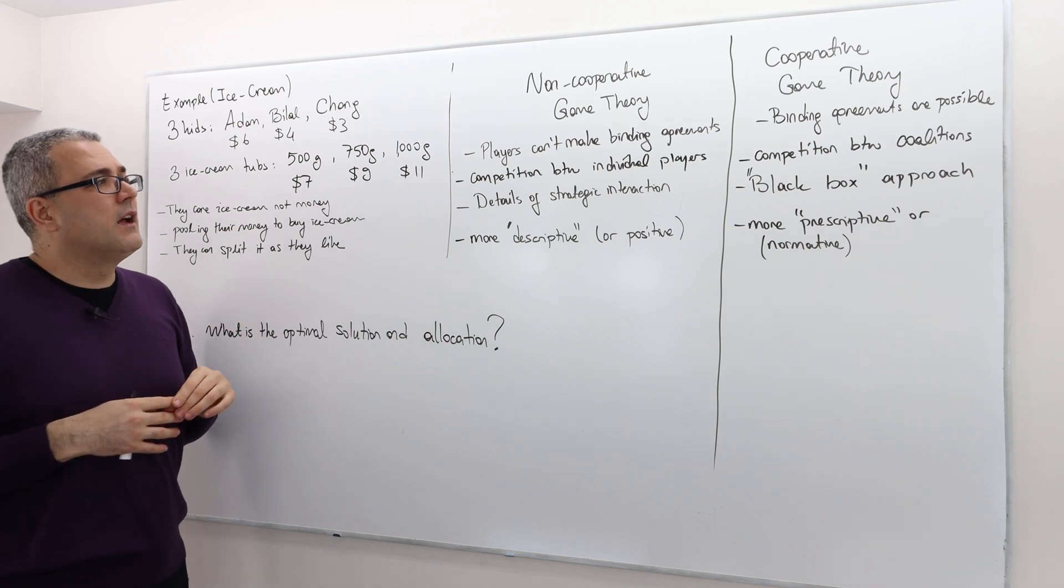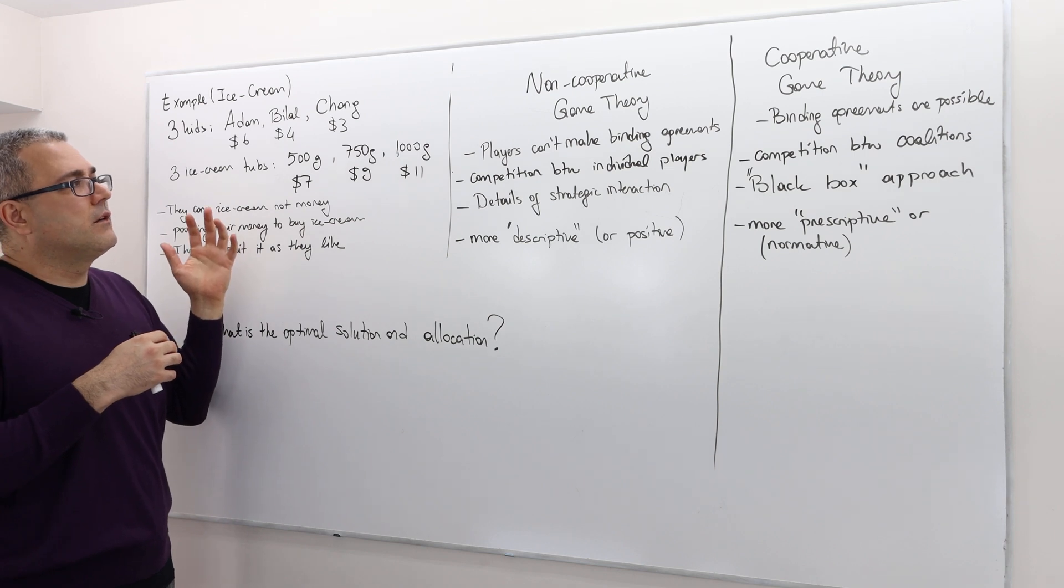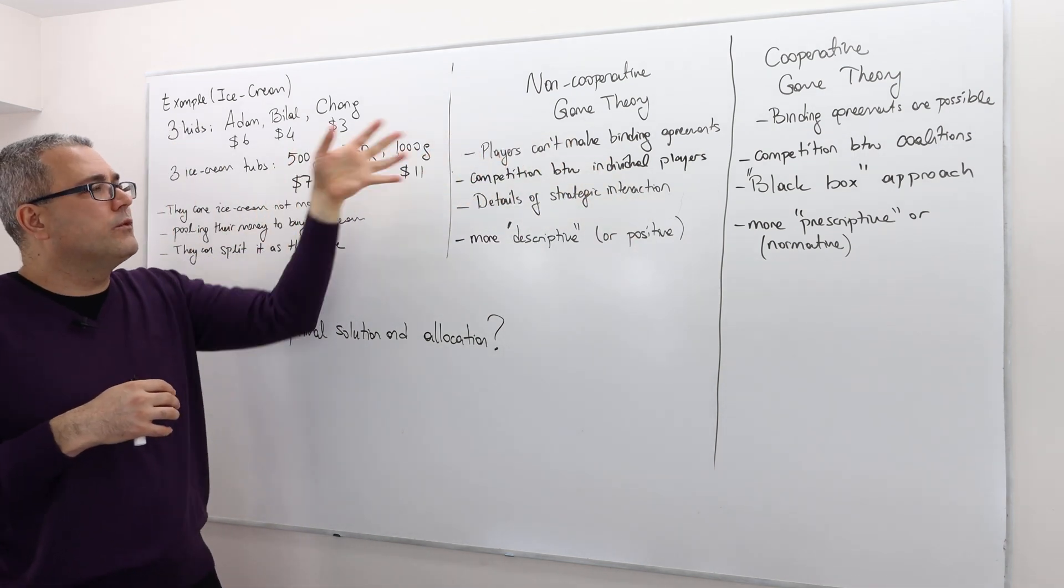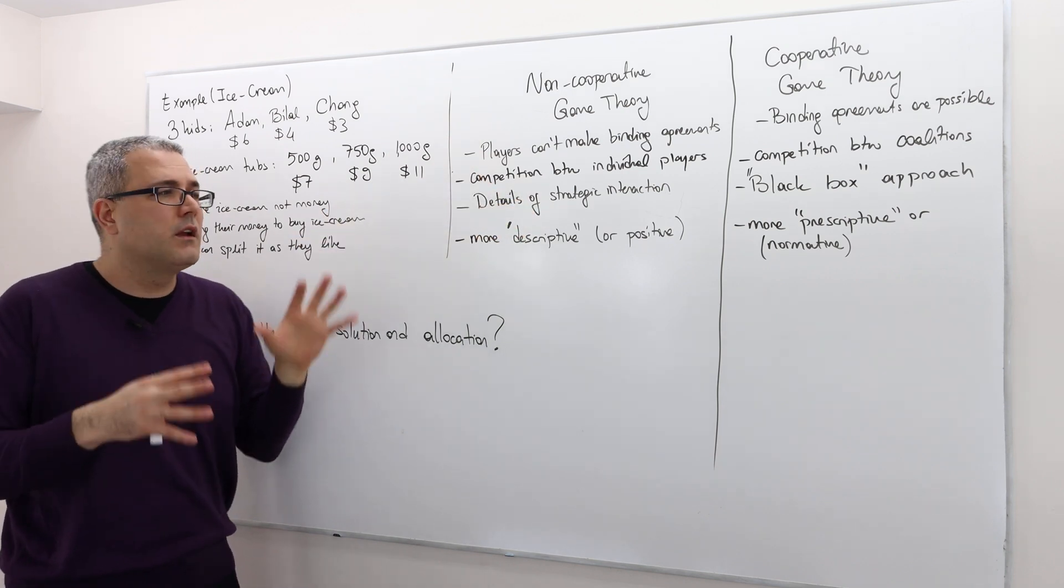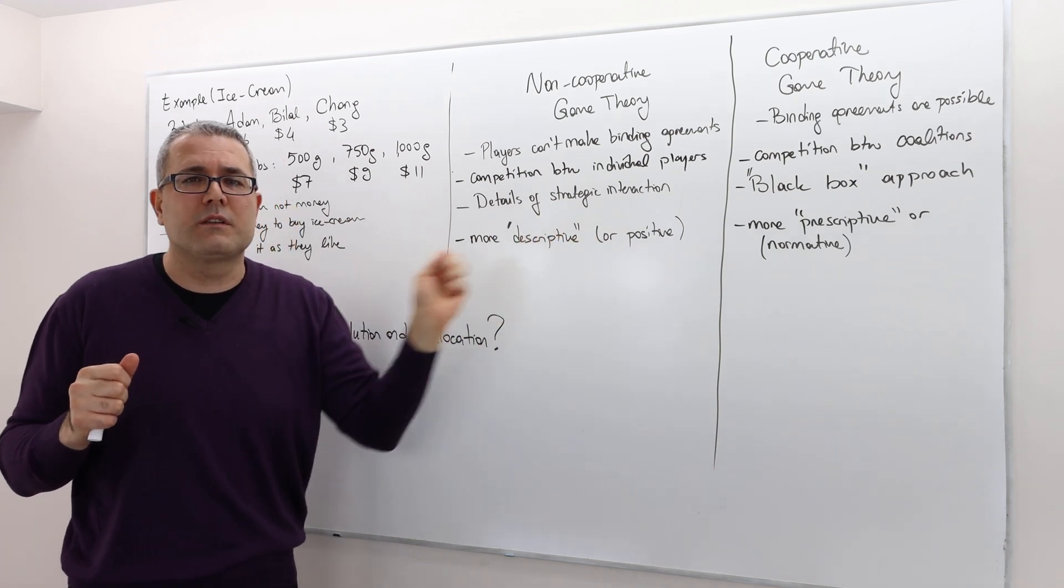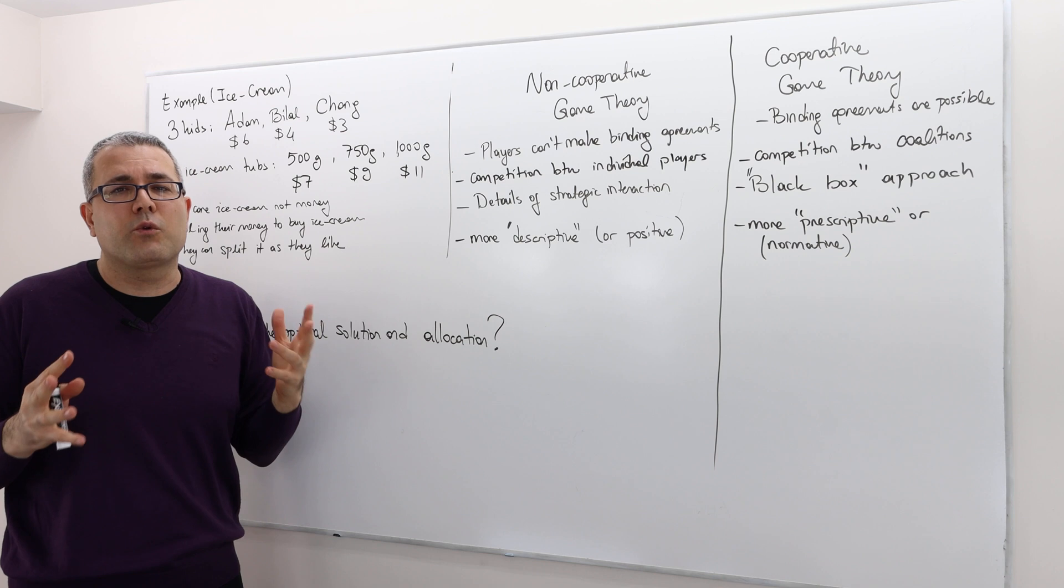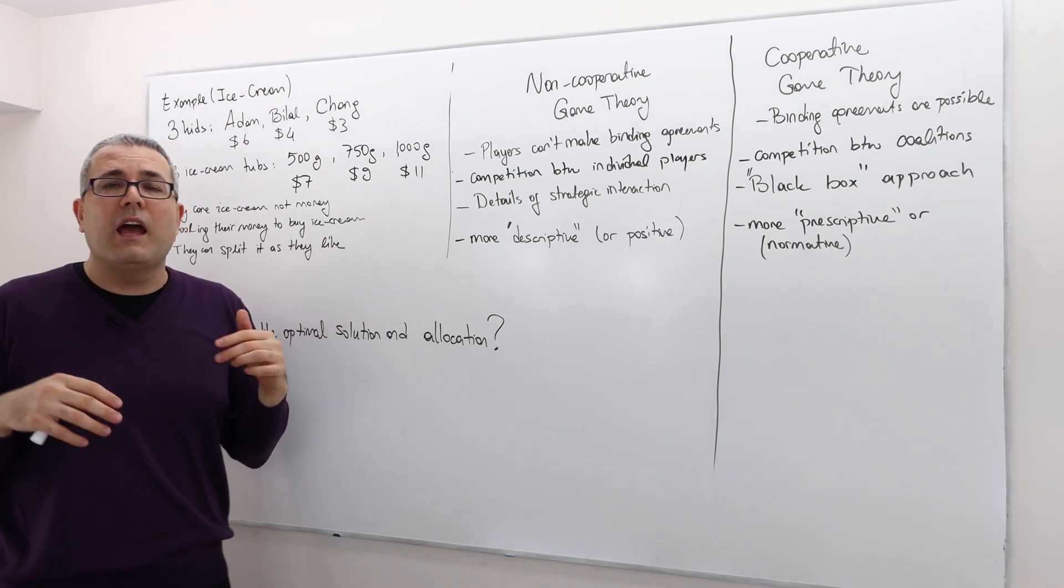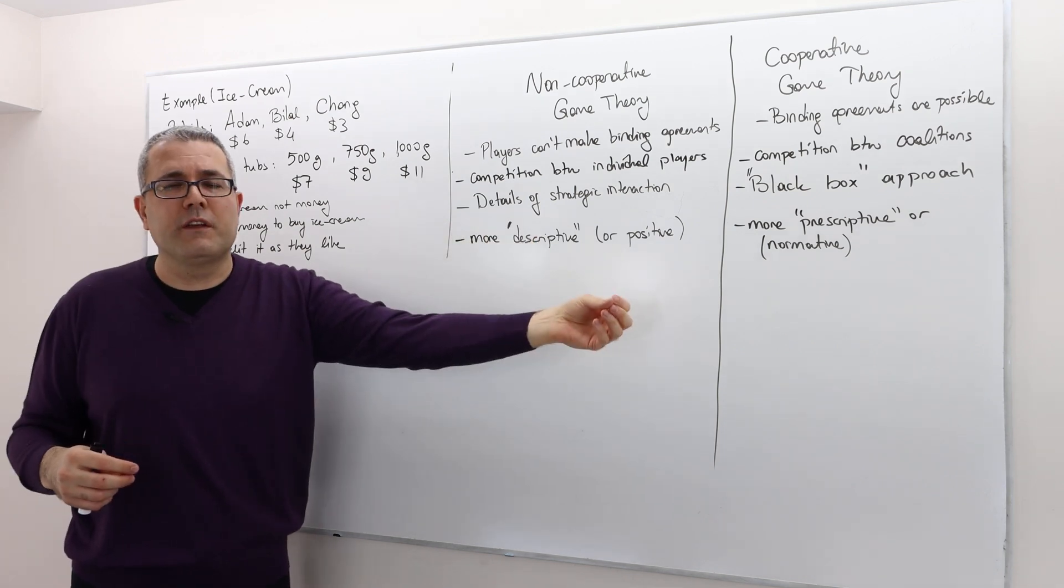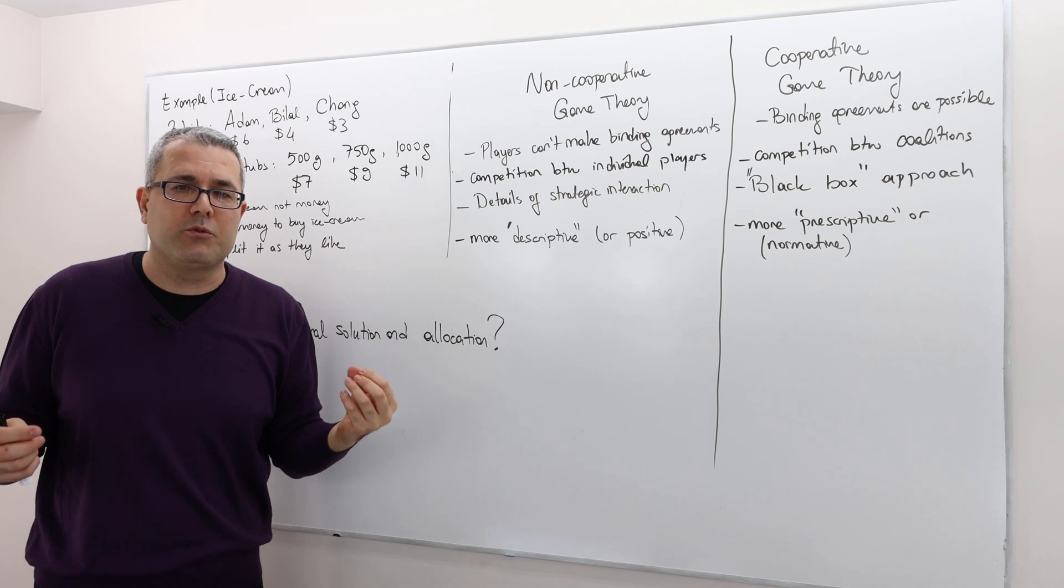So once again, when I go back to my original question, it's like, when do we use cooperative game theory or when do we use non-cooperative game theory? Once again, we can model the same strategic environment under either approaches. Obviously, that depends on what type of questions you're interested in. And clearly, in some environments are more suitable to cooperative game theory. For example, think of bargaining situations.